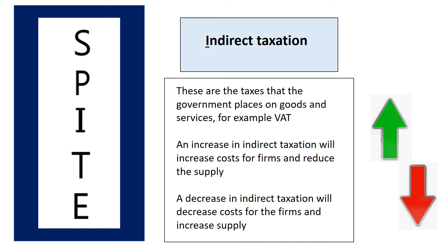Indirect taxation is another factor affecting supply. These are the taxes that the government places on goods and services. Taxes are an additional cost of production, so if the government increases indirect taxes such as VAT, this would lead the firm to produce a lower quantity at a given price, meaning the supply curve would shift to the left. However, lower taxes will encourage firms to produce more in that market and can stimulate more supply of the goods and services they produce, therefore shifting the supply curve to the right.